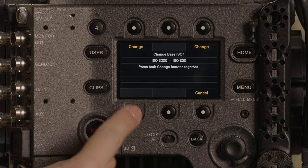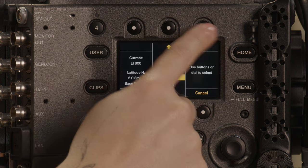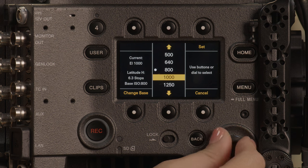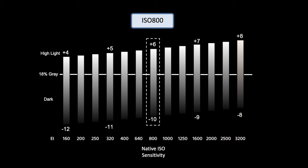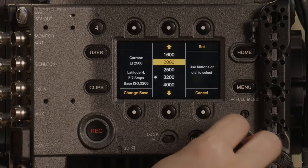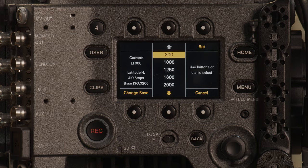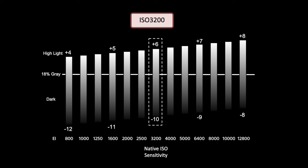There is crossover within the two indexes. This means it is possible to be at an 800 base but rate the camera at 3200. By doing this, you are evenly distributing your dynamic range, where the highlight latitude is at 8 stops and your shadow latitude is at 8 stops. When in 3200 base and scrolling down to 800, you are redistributing your latitude to 12 stops in the shadows and 4 stops in the highlights. Any of these options are just tools for capturing your story.